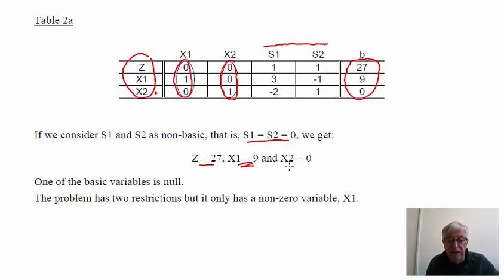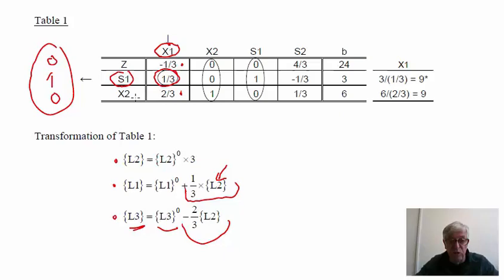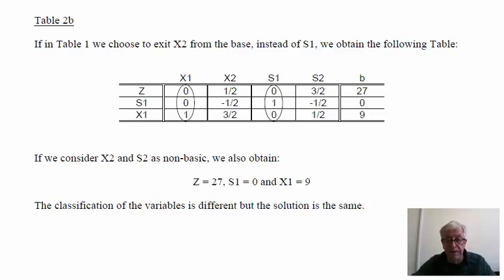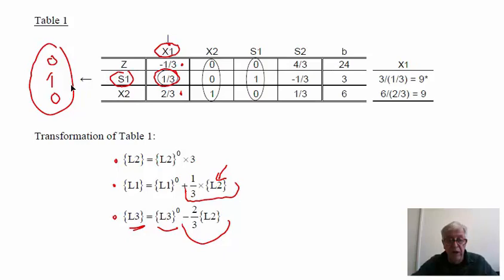To understand what's happening, we need to look at the graphical solution. But first, let's see what happens if instead of extracting s1, we extract x2 from the base. When we choose to extract x2 instead of s1, we obtain a different table. Reading the solution from that table, we get z equal to 27 and x1 equal to 9 — the same solution as before. The non-basic variables in this case are s1 and s2.